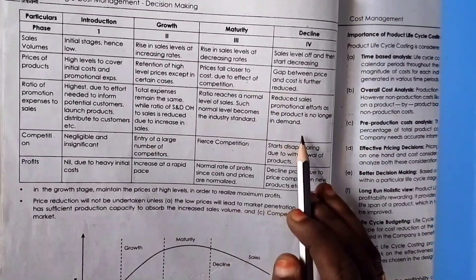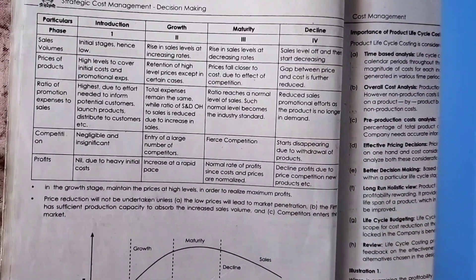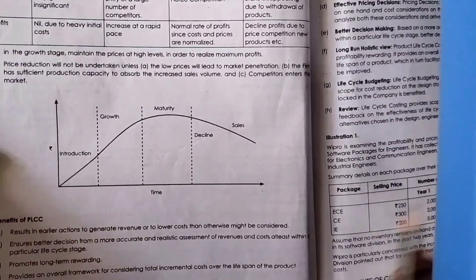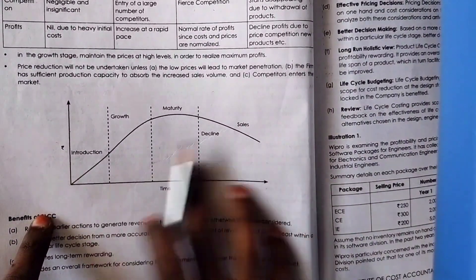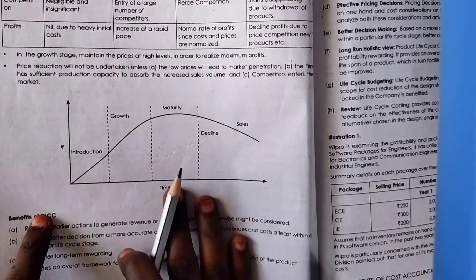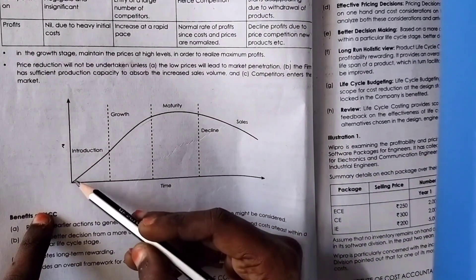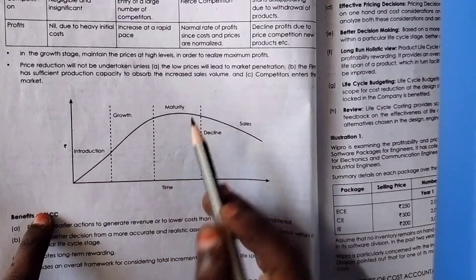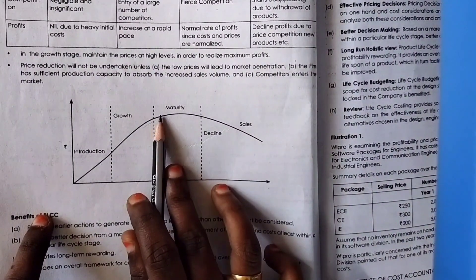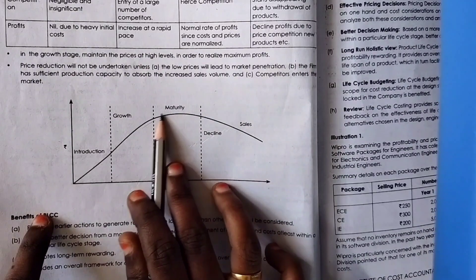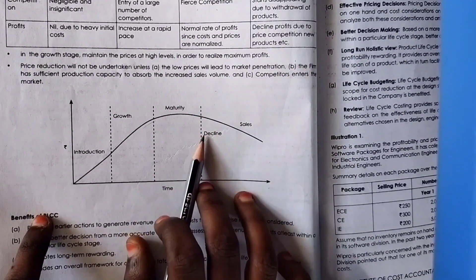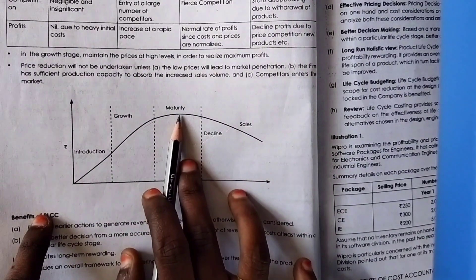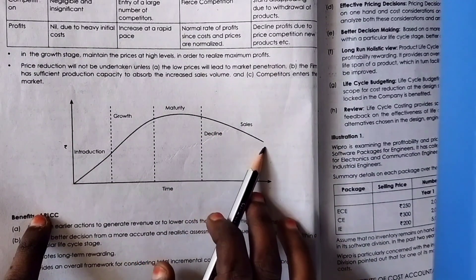In overall analysis: in the Introduction and Growth phases, costs are increasing and reach their highest level. In Maturity and Decline, costs will be decreasing. Looking at the graph, you can see that in Introduction and Growth, costs are increasing; at Maturity they are at the peak; and going into Decline, sales will be decreasing.